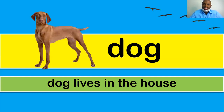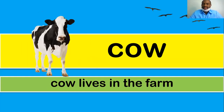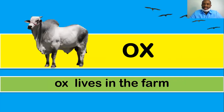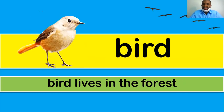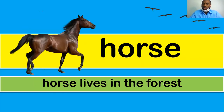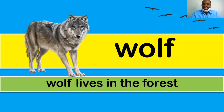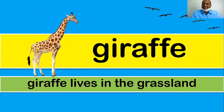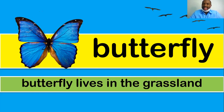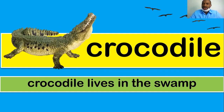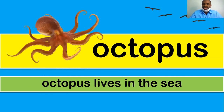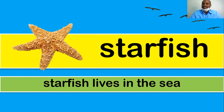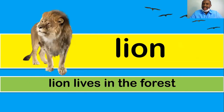One more time — let's go through all the animals: dog, cat, fish, cow, chicken, buffalo, pig, duck, ox, rabbit, bird, elephant, horse, tiger, monkey, wolf, snake, fox, kangaroo, giraffe, zebra, butterfly, tortoise, frog, crocodile, camel, jellyfish, octopus, dolphin, whale, shark, starfish, turtle, lion.